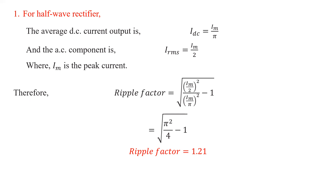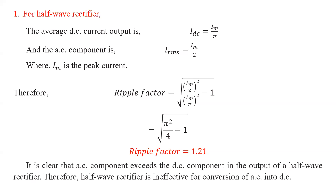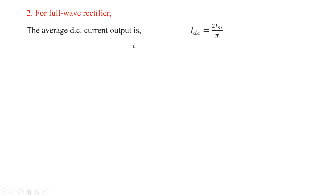A ripple factor of 1.21 means the AC component is 1.21 times the DC component in the output of the half wave rectifier — so the AC component actually exceeds the DC component. This is why the half wave rectifier is not suitable for pure rectification, since the ripple factor is too high. Let us now calculate the ripple factor for the full wave rectifier.